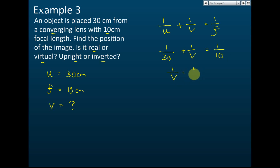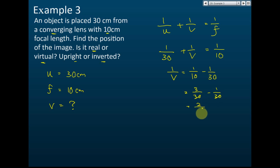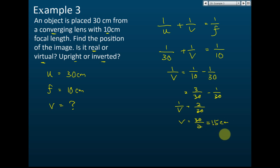So 1 over v equals 1 over 10 minus 1 over 30, which equals 3 over 30 minus 1 over 30, giving 2 over 30. Therefore v equals 30 over 2, which equals 15 cm. The distance of the image is v equals 15 cm.